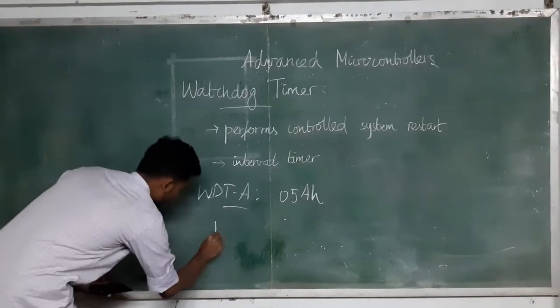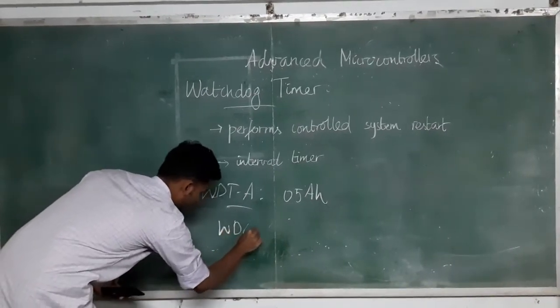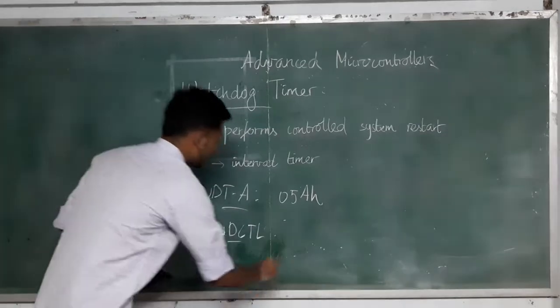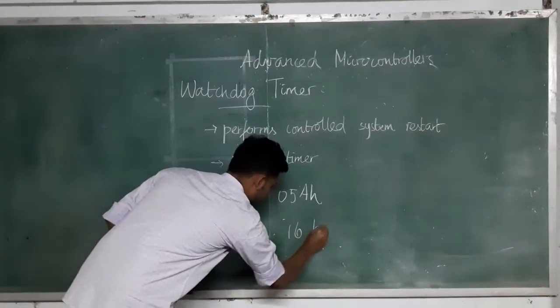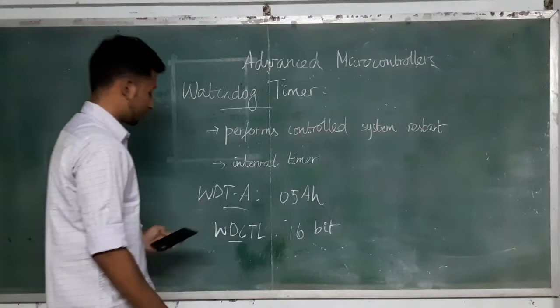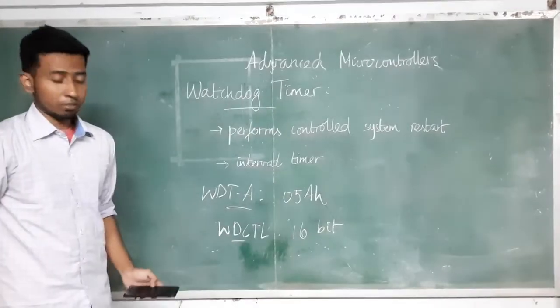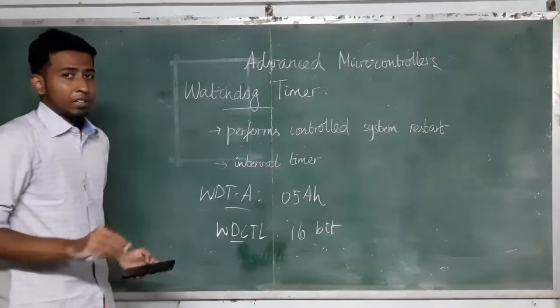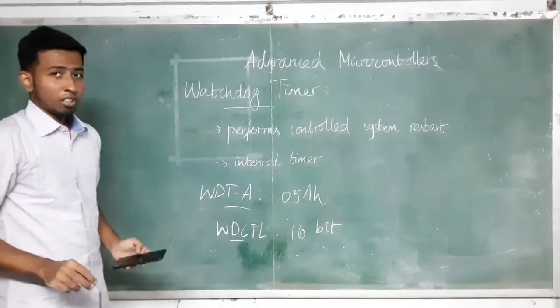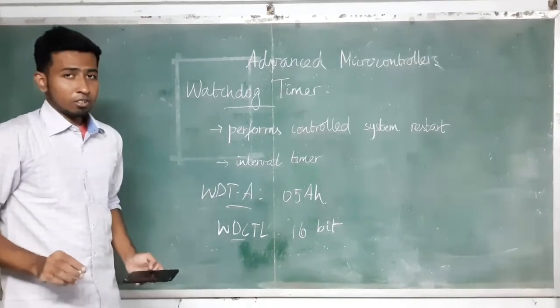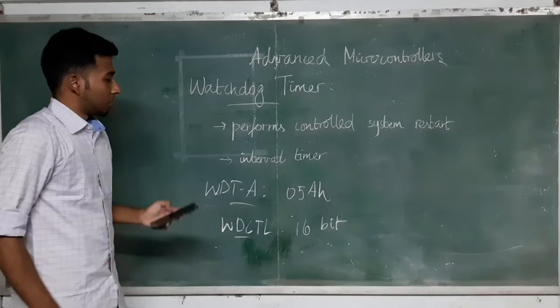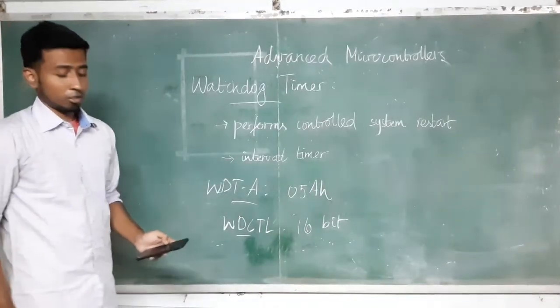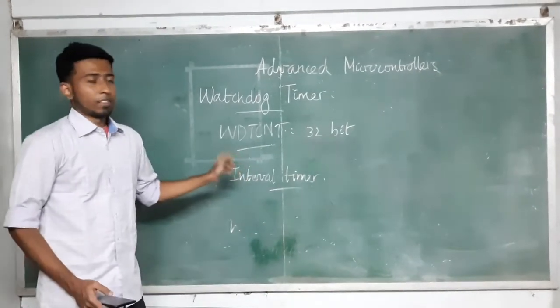Next we have the WDTCTL register, the watchdog timer control register. It is a 16-bit register. Bits 15 to 8 are the watchdog timer password and it is always written as 05AH. Bit number 7 is the watchdog timer hold bit. This bit stops the watchdog timer. If the value is 0, the watchdog timer is not stopped. If the value is 1, it is stopped. Otherwise, the watchdog timer is always active.